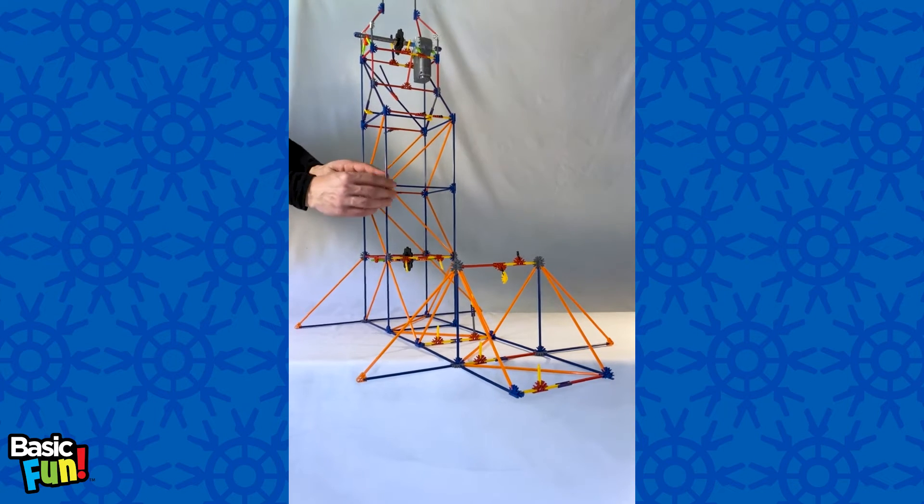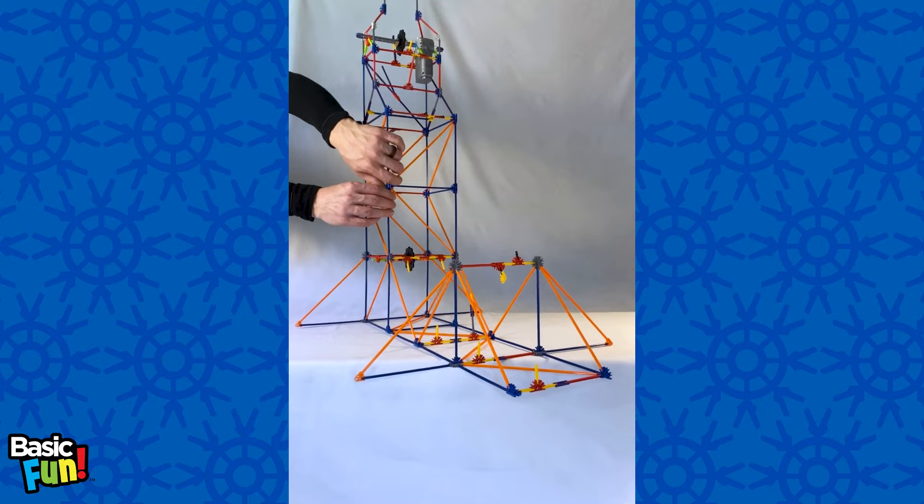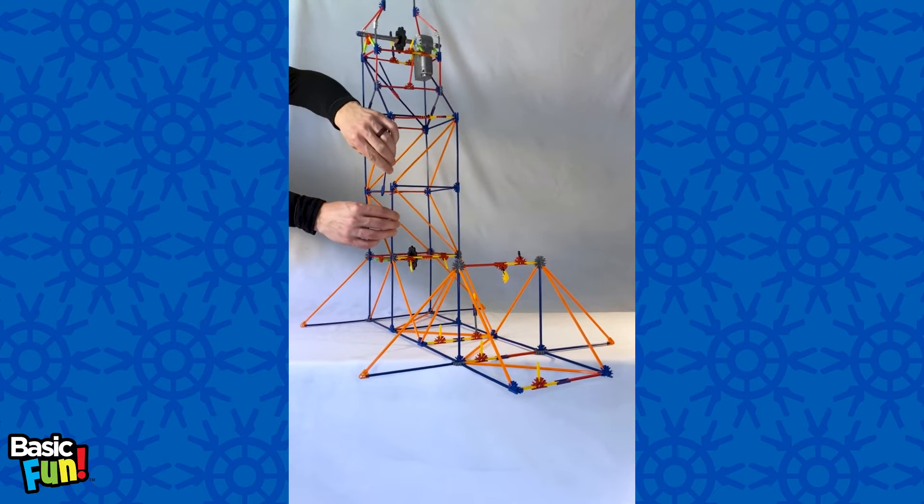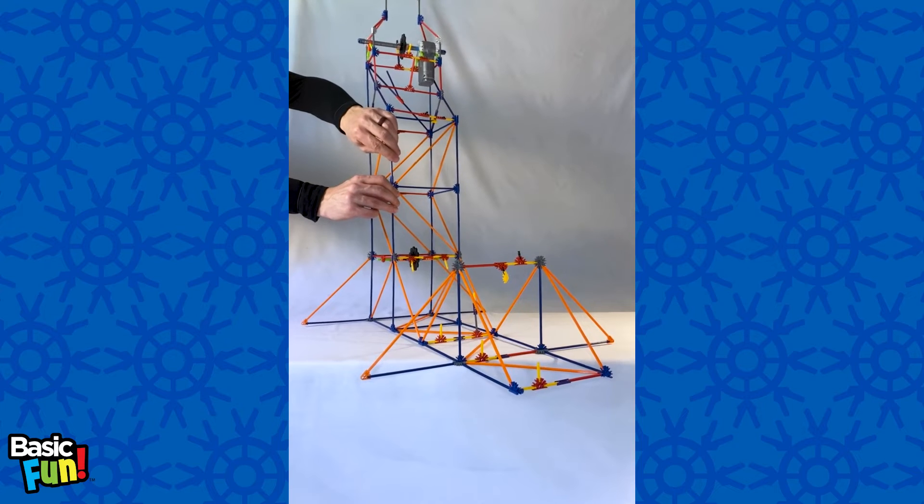First, make sure all these four-slot and seven-slot connectors are fully engaged. If they are not engaged, it will cause the entire structure to flex and come out of alignment.